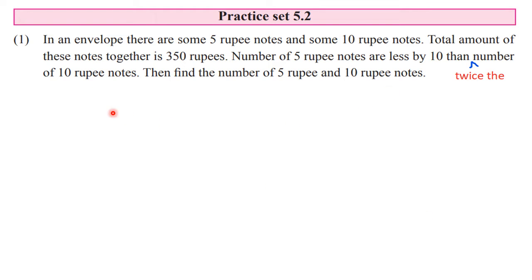The first question: in an envelope there are some 5 rupee notes and some 10 rupee notes. Total amount of these notes together is 350 rupees. Now note there is a printing mistake in the old textbook edition — two words are missing. So the correct reading is: number of 5 rupee notes are less by 10 than twice the number of 10 rupee notes. Then find the number of 5 rupee and 10 rupee notes.